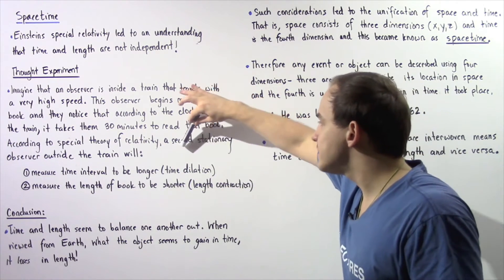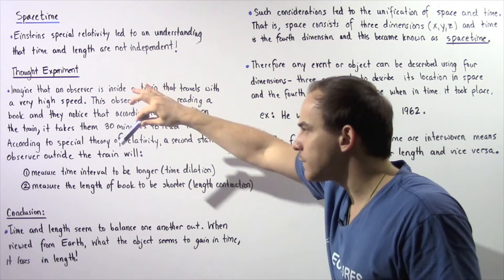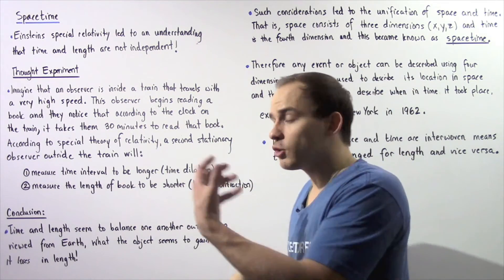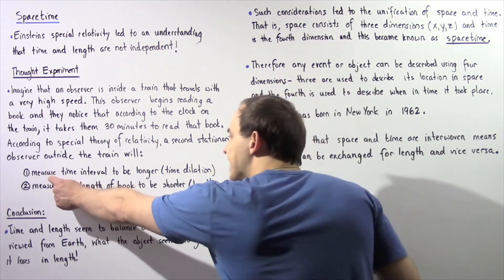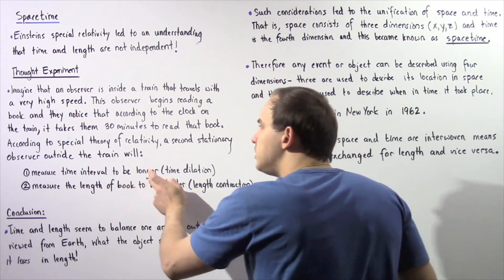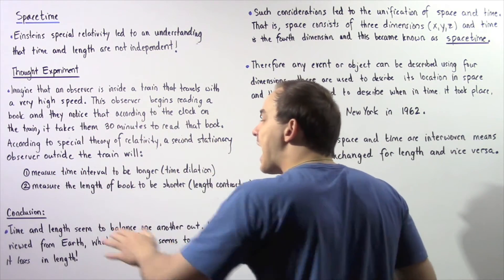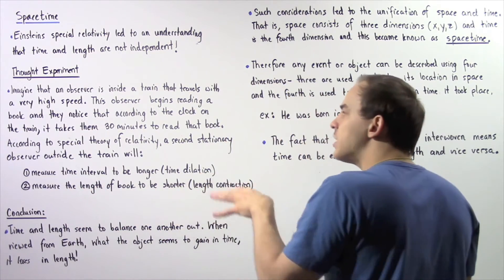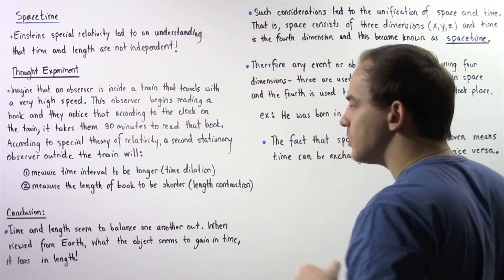So basically, the second stationary observer outside the train found on Earth, our inertial reference frame, will measure the time interval to be longer than 30 minutes and will measure the length of the book to be shorter than the length of the book on the train.